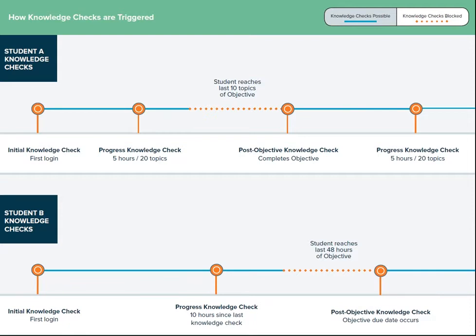The timer for these knowledge checks is reset any time a student completes any type of knowledge check. There are also built-in time spans where knowledge checks are blocked. For example, if a student reaches the last 10 topics of an objective, like Student A, or the due date is within 48 hours, like Student B, progress knowledge checks will be blocked. All of this keeps the student from being over-assessed.